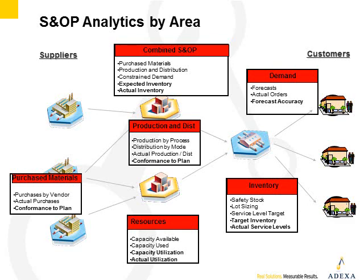Finally, at the top is what we call the analytics for the combined S&OP plan. There you can bring together all the different areas of the analytics into a combined S&OP view — purchased materials, production and distribution, demand, your expected inventory levels, and your actual levels all in one view. So this covers all the different measures that help you during S&OP planning.